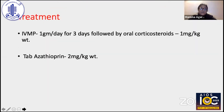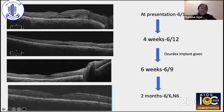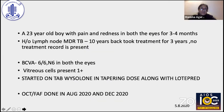The patient underwent intraocular foreign body removal in the left eye. For the right eye, treatment was intravenous methylprednisolone for three days followed by oral corticosteroids, and subsequently azathioprine continued for a year. At two months, the patient gained vision of 6/6 N6 — since this was the only seeing eye, we were able to salvage it. At four weeks, a small pocket of subretinal fluid remained in the macular area, so we injected an Ozodex implant along with continuation of systemic steroids and azathioprine, resulting in beautiful vision recovery to 6/6 N6 at two months.